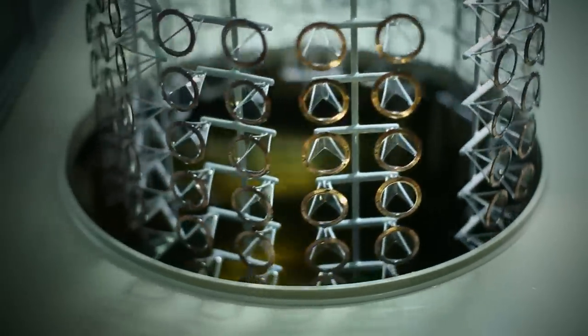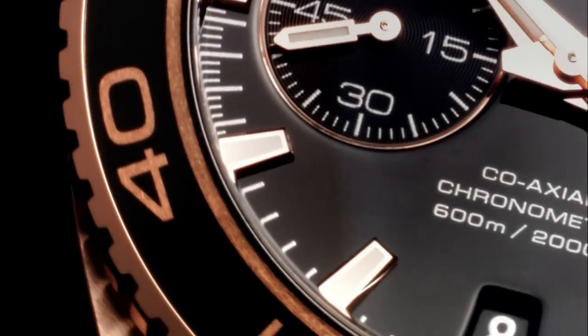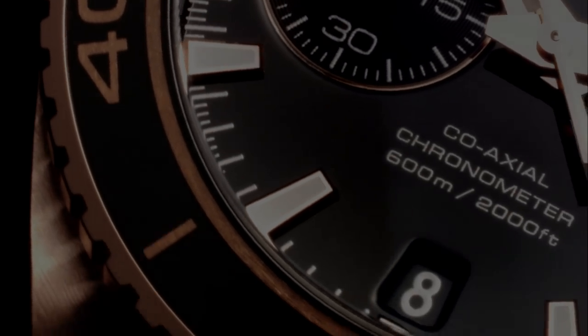When the rings are extracted from the bath, the excess gold is removed to reveal the original ceramic surface, leaving a solid gold layer in the diving scale. The result is a dramatic contrast between the polished ceramic material and the stunning brushed 18-karat red gold.